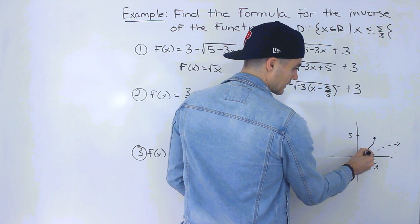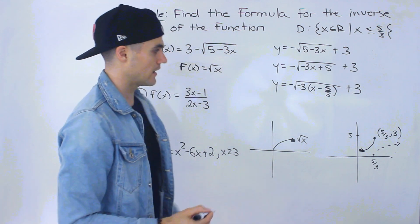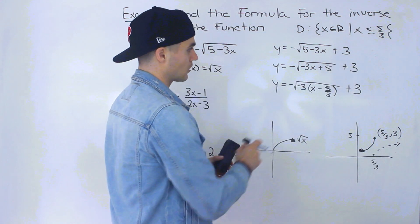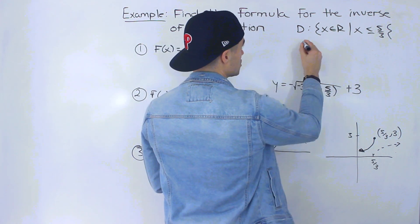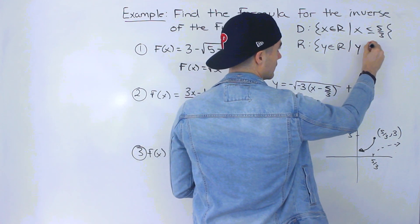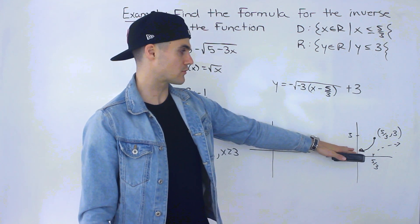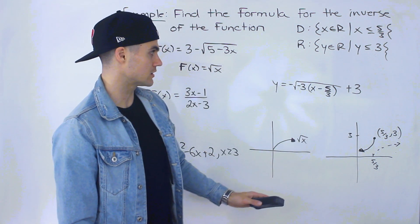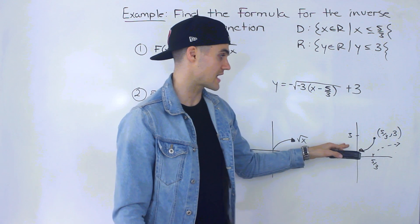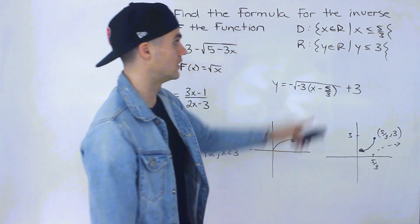So the vertex/starting point is at (5/3, 3), and the function opens downward-left from there. The domain is x ≤ 5/3, which we confirmed. We can also figure out the range: y ∈ ℝ, y ≤ 3. All y-values are less than or equal to 3 because the function was shifted up by 3 and then reflected in the x-axis, so instead of going up it goes down from that point.